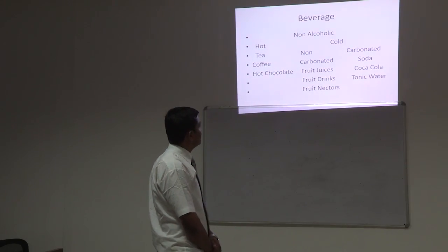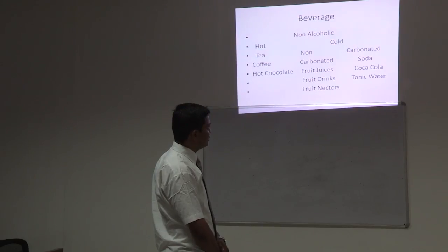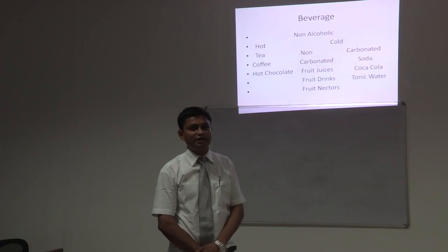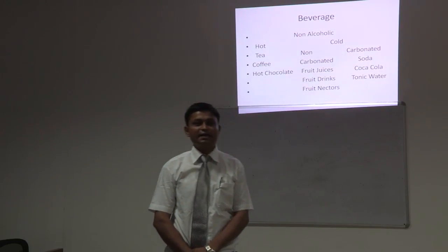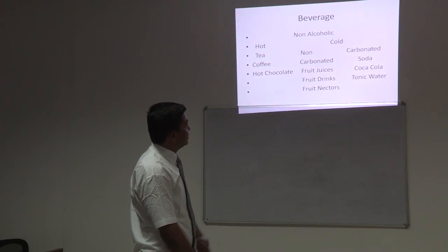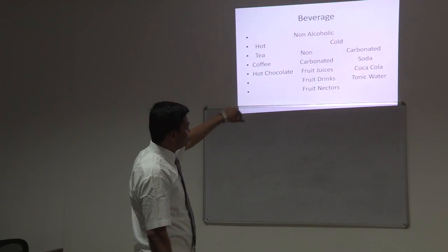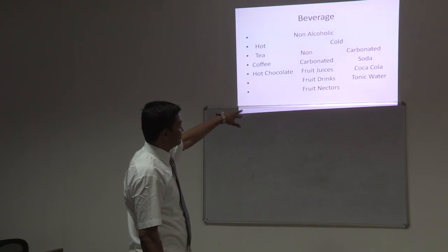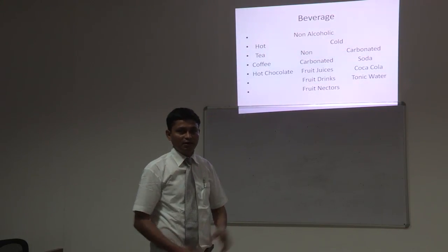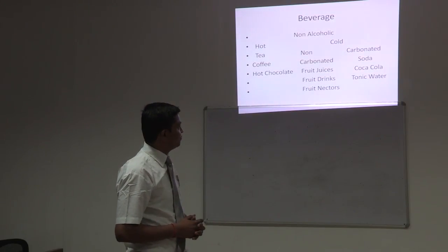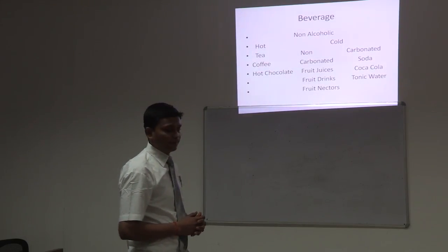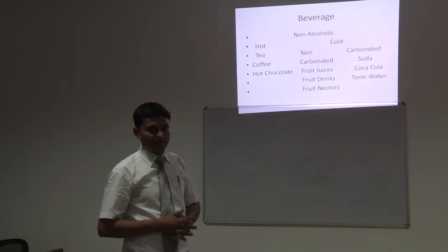Another category is cold. Cold is divided into two partitions: non-carbonated and carbonated. Carbonated drinks have some physical characteristics — CO2 is incorporated in them. Under non-carbonated, there are fruit juices, fruit drinks, and fruit nectar. Fruit juices are simply the juice of a fruit; fruit drinks are drinks in which fruit juice is included. Fruit nectar are those in which 30% of fruit solids are present.